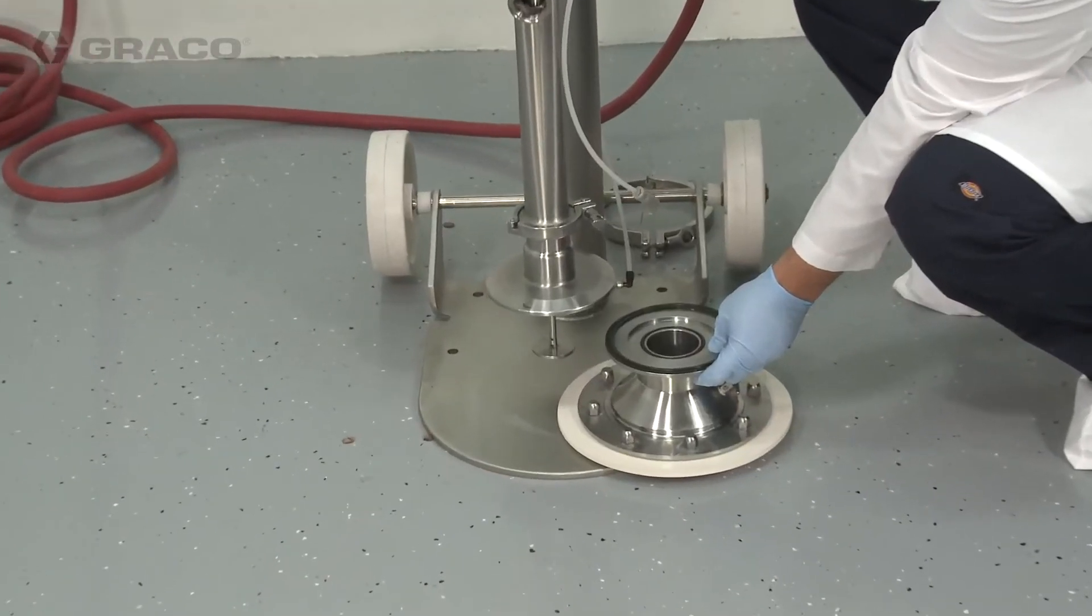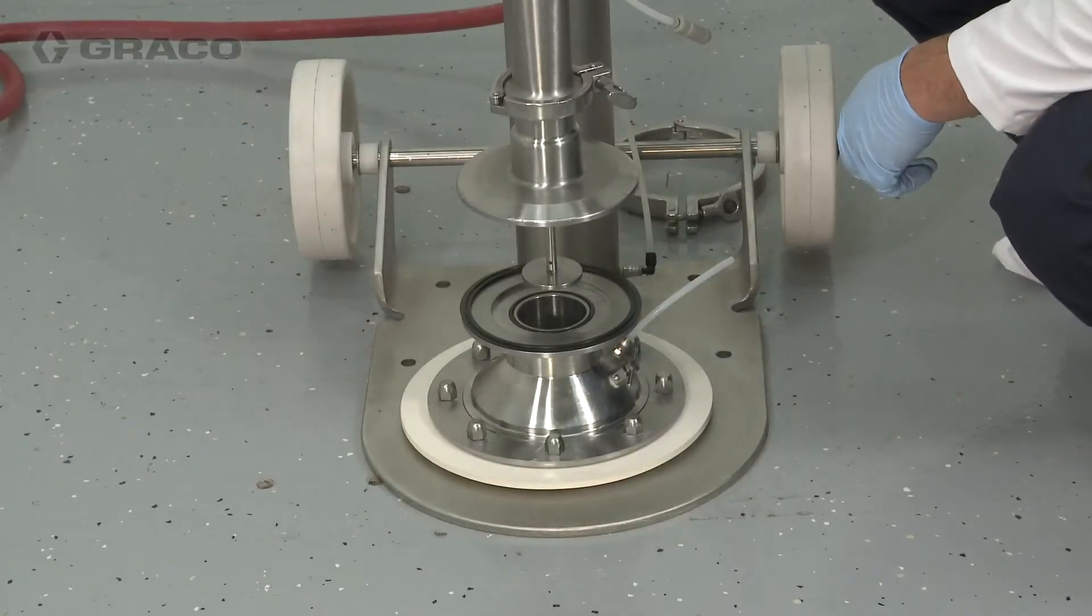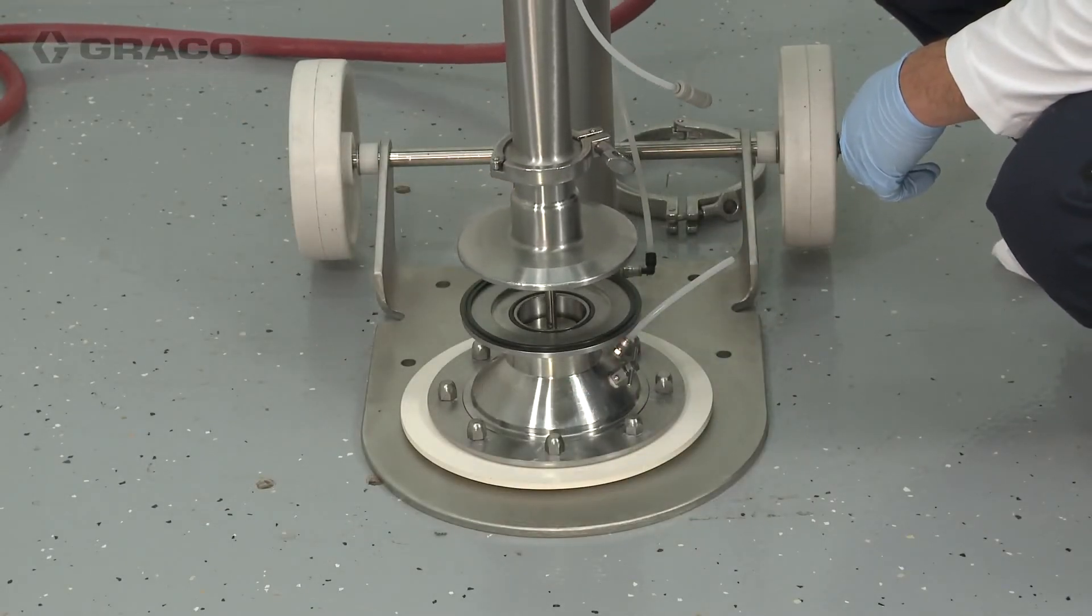Raise the ram and locate the platen under the pump lower. Move fingers and tools out of the way and slowly lower the pump into the platen.